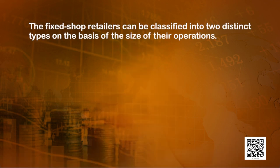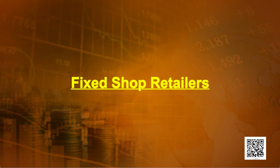As the name is self-explanatory, fixed shop retailers are basically those retailers, shopkeepers, shops and stores that have a fixed place of business — who do not keep changing their place of business very often. These fixed shop retailers are further classified into small shopkeepers and large retailers. We will talk about different categories of small and large retailers one by one. Let us begin with fixed shop small retailers.